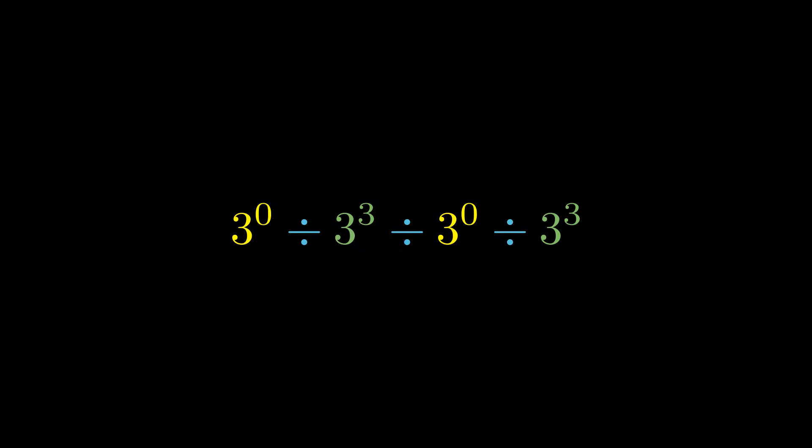Now, any non-zero number raised to the power of zero is always 1. And 3 cubed? Well, that's just 3 times 3 times 3, which gives us 27. So we get 1 divided by 27, divided by 1, divided by 27. Looks simple enough, right? But here's where things get interesting.